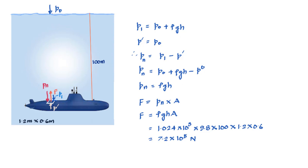To summarize: the pressure on the hatch from the top accounts for atmospheric pressure plus the pressure due to the water column above it. The pressure from inside is p₀. The net pressure is outside minus inside, and the force required equals that net pressure multiplied by the area of the hatch, giving 7.2 × 10⁵ newtons — the force the crew must apply to open the hatch.